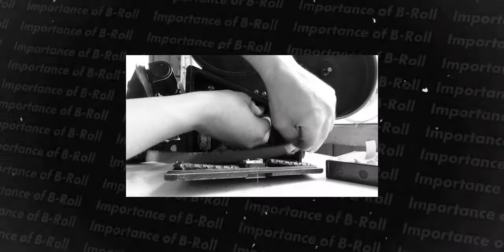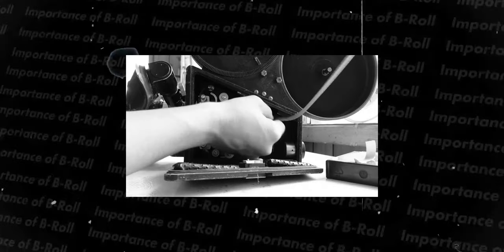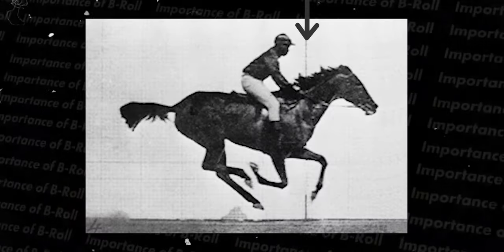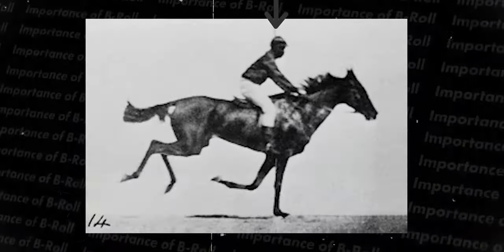Back before digital, they used to shoot on film reels. The footage would be printed on these reels, but when it came to editing, the lines between reels could be visible. So editors would put in another lot of footage overlapping the original footage so that the lines were no longer visible. And that is what b-roll came from.